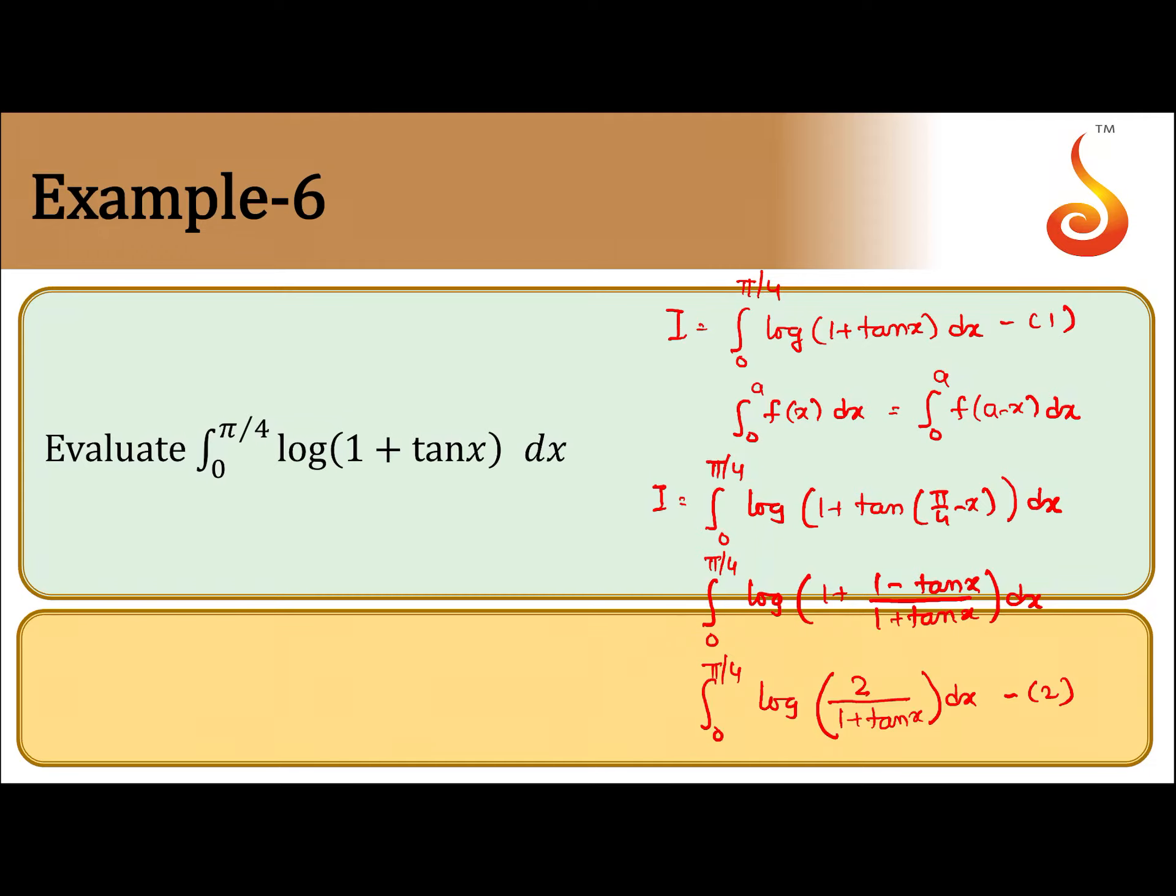Adding equation 1 and equation 2, we get 2I equals integral from 0 to π/4 of log(1 + tan x) plus log(2/(1 + tan x)) dx. Using the log property, these terms simplify.